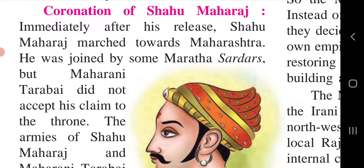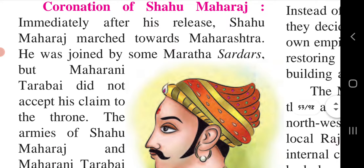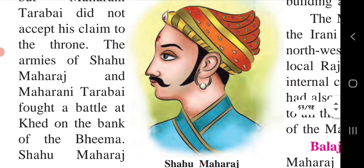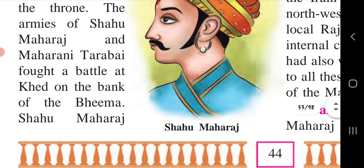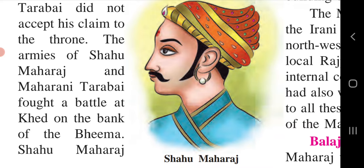Immediately after his release, Shahu Maharaj marched towards Maharashtra. He was joined by some Maratha sardars, but Maharani Tarabai did not accept his claim to the throne. The armies of Shahu Maharaj and Maharani Tarabai fought the battle at Kheda on the bank of the Bhima river. A battle had been fought between Maharani Tarabai and Shahu Maharaj at the place Kheda, which is near the Bhima river.